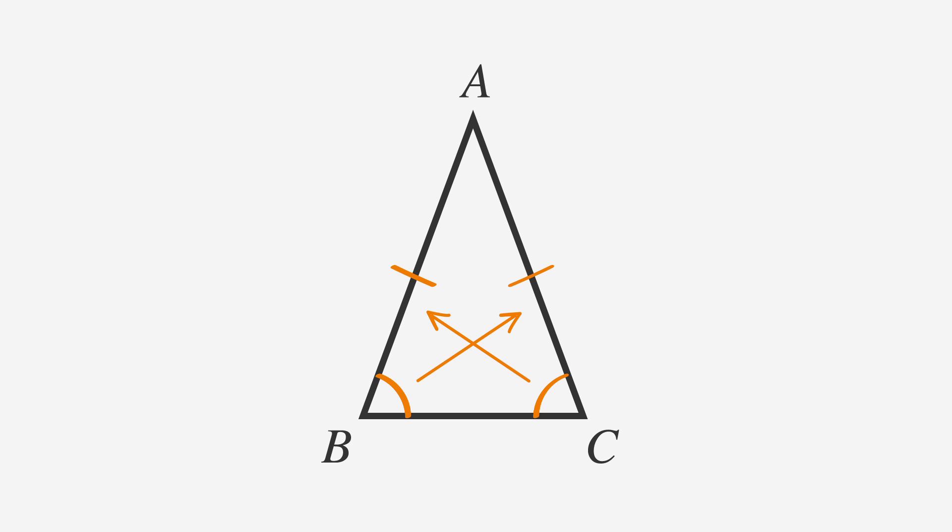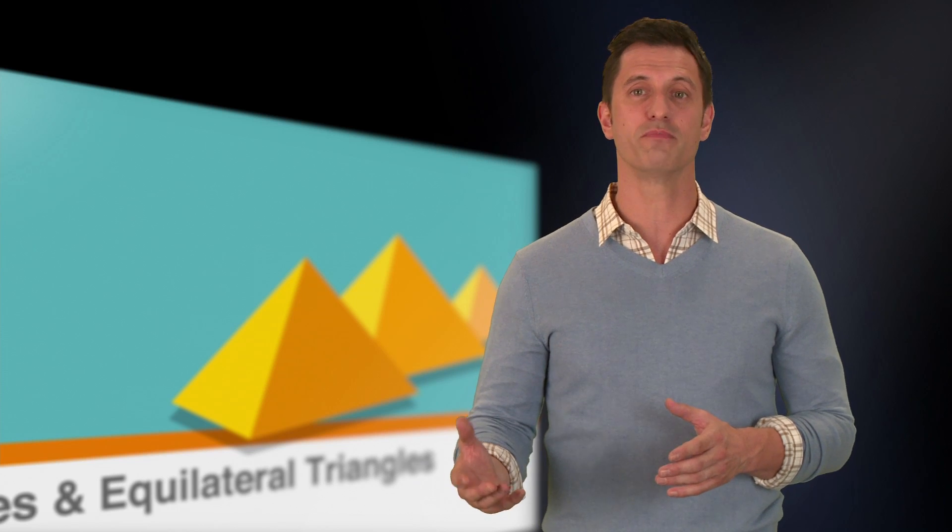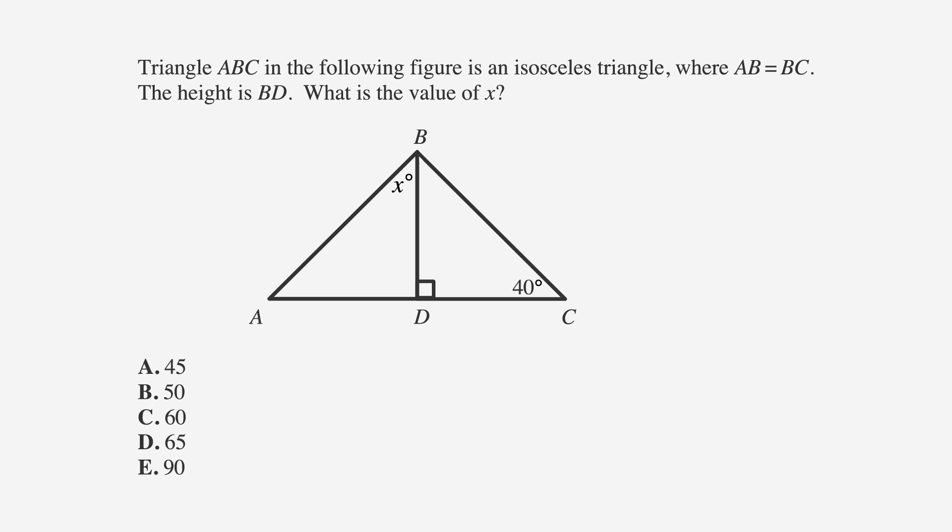Now let's look at an ACT problem in which we have to solve for the missing angle of a triangle, knowing that the triangle is isosceles. Triangle ABC in the following figure is an isosceles triangle where AB equals BC, and the height is BD. What is the value of X?